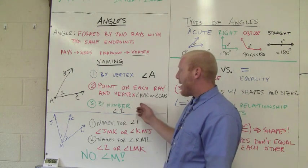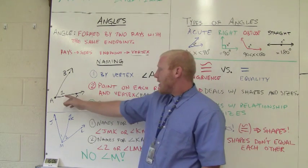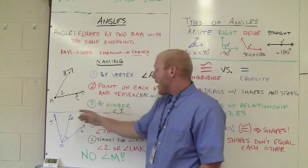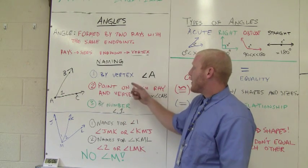Or I can name it by a number. As you see here, the number is 1. That would be angle number 1, so angle 1. Those are our three ways.